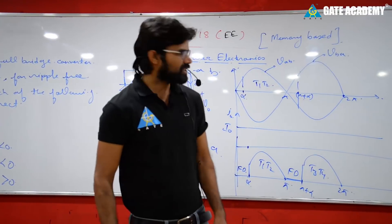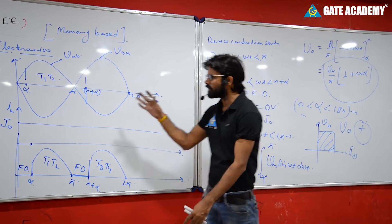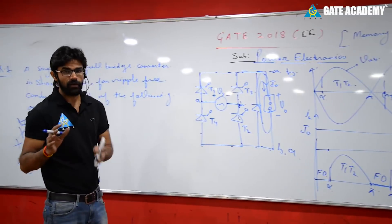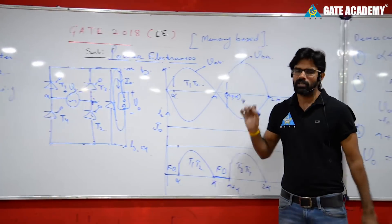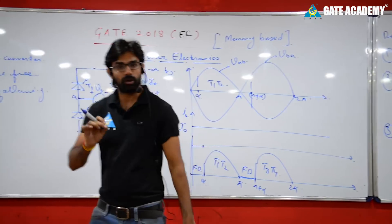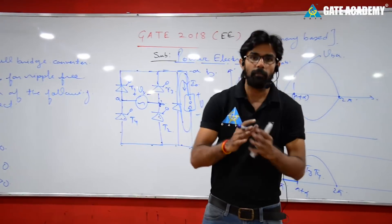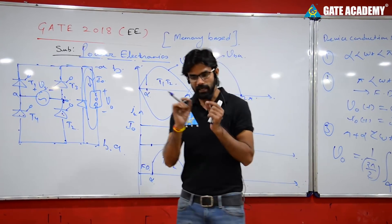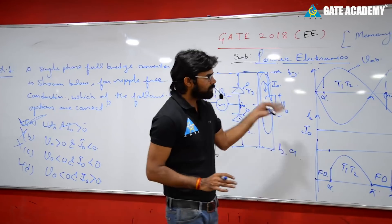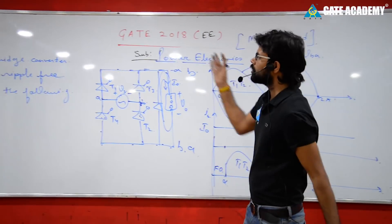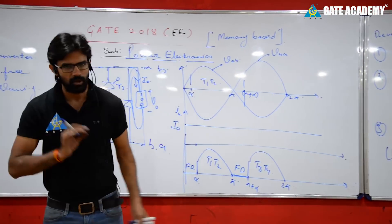Therefore, option A is correct: V_not and I_not are always greater than zero. This question can be solved within seconds. I think you have done this well. The questions are not very tough — the paper also had many easy questions. We are providing all solutions based on the available data. Thank you so much.